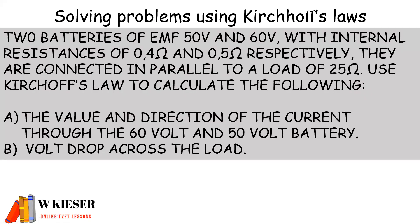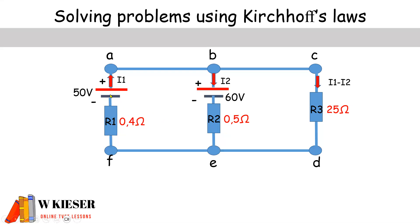Now we can move to our example. Two batteries of EMF of 50 volts and 60 volts with internal resistances of 0.4 ohms and 0.5 ohms respectively are connected in parallel to a load of 25 ohms. Use Kirchhoff's Law to calculate the value and direction of the current through the 60 volt and 50 volt battery, and then finally the volt drop across the load. I've gone ahead and drawn the circuit. We have two batteries: one of 50 volts with an internal resistance of 0.4 ohms, and 60 volts with an internal resistance of 0.5 ohms, and our load has a value of 25 ohms. I1 is flowing in a positive direction, I2 is also in a clockwise direction so that will be positive, and then we have I1 minus I2.